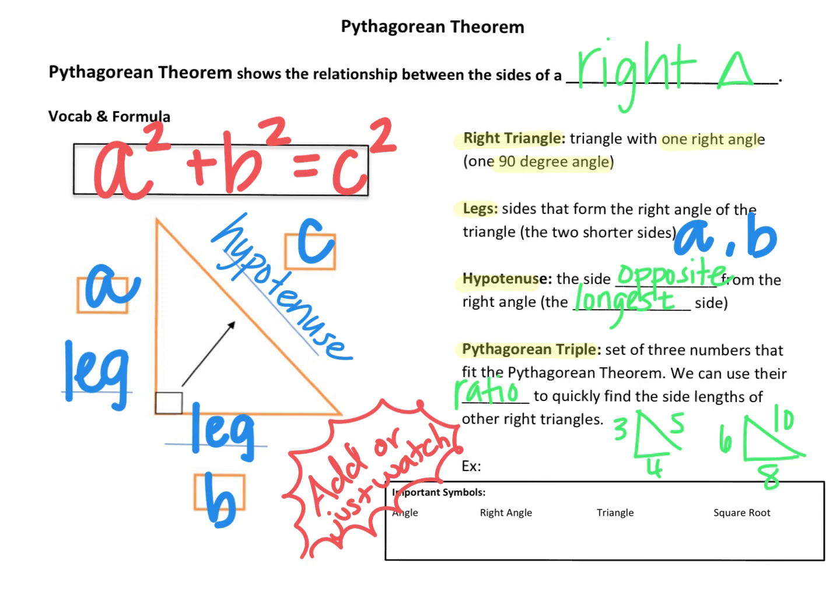Before moving on to do some examples together, let's review some important symbols. This is not included in your notes, but I would like you to add it in the margins or wherever you have some blank space on your page. The symbol for an angle looks like this. The symbol for specifically a right angle looks like an L with this small box. That box at the vertex tells us that that angle is 90 degrees. The symbol for a triangle looks like this. It is just a triangle, and as we know from our study of radicals, a square root looks like this.